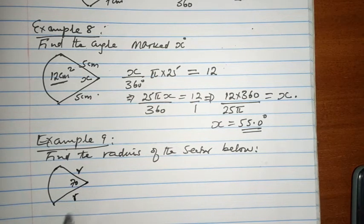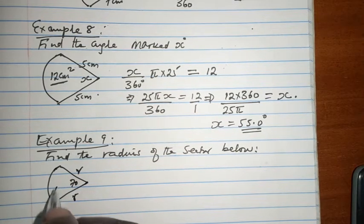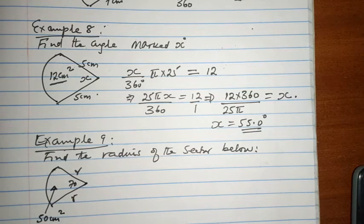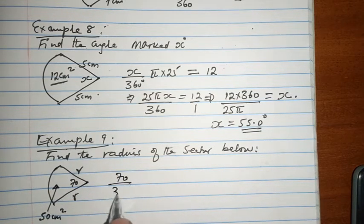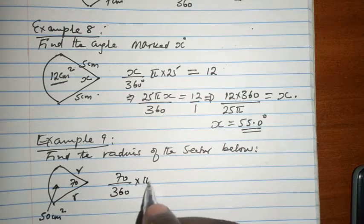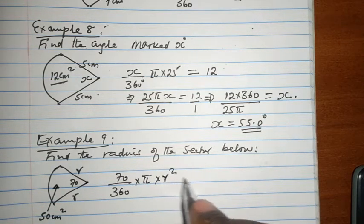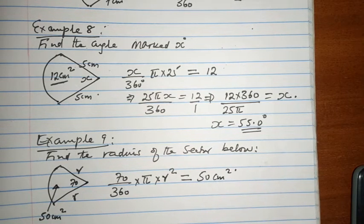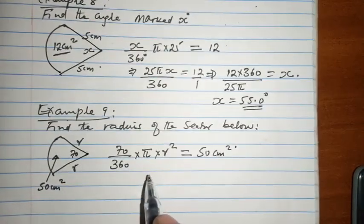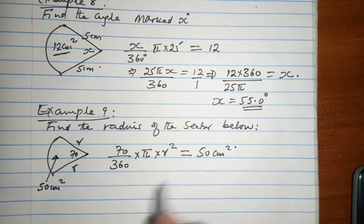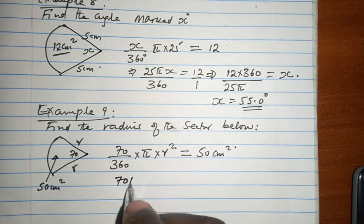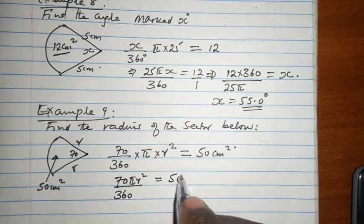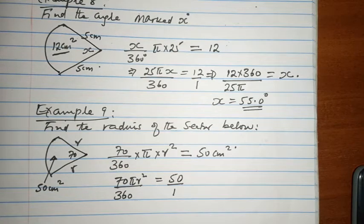The angle at the center is 70 degrees. There is the radius, there is the radius, and there is the area which is 50 centimeters squared. It goes without saying that 70 out of the possible 360 times pi times r squared should give you the area of 50 centimeters squared. When we clean this up, we have 70 pi r squared over 360 equals 50 over 1.